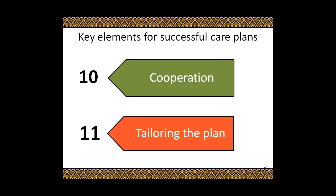Eleventh, tailoring the plan: tailoring the plan will be required for pharmacists who work in areas of specialization, for example renal, oncology, infectious disease, and TPN pharmacists. However, community pharmacists are much broader in their scope of practice. Patients generally have one to two complaints or health problems which require care and monitoring, and as such can have specialized monitoring sheets. Thank you and good luck.